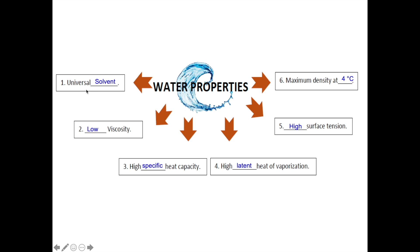Water acting as universal solvent. Water has low viscosity. Water has high specific heat capacity. Water has high latent heat of vaporization. Water has high surface tension. And water has a maximum density at four degrees Celsius.